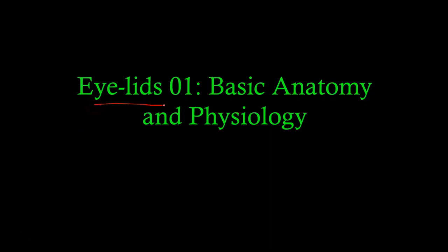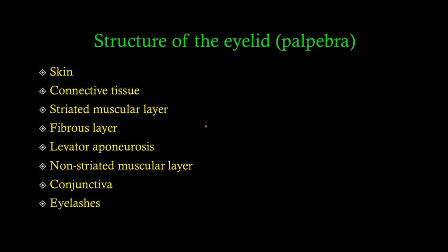Today we'll be starting our lectures with the eye. The first part of the eye is the eyelids, and today we'll be studying the basic anatomy and physiology of the eye. Starting from the outside towards the inside, the eyelid contains: a skin layer, a connective tissue layer, a striated muscular layer, a fibrous layer, the aponeurosis of the levator muscle, a non-striated muscular layer, and then the conjunctiva — from superficial to deep.